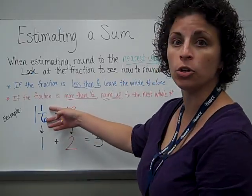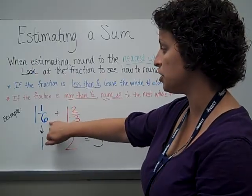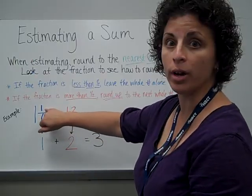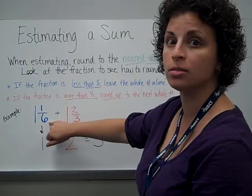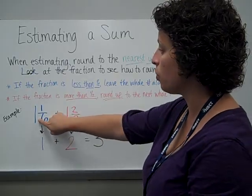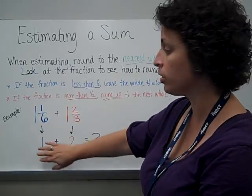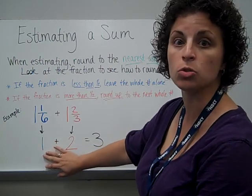And so this time, we really are looking for half of the denominator. And again, 1 is less than half of 6, because that was 3. And so this, we will leave the whole number alone. So I'm estimating this to just 1.